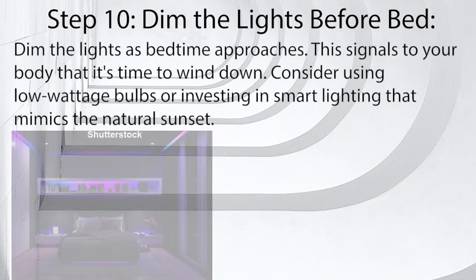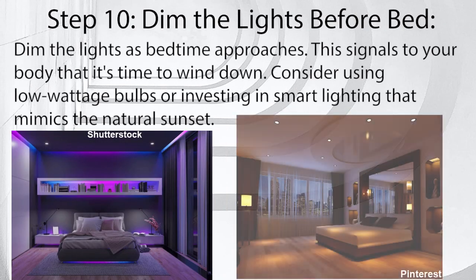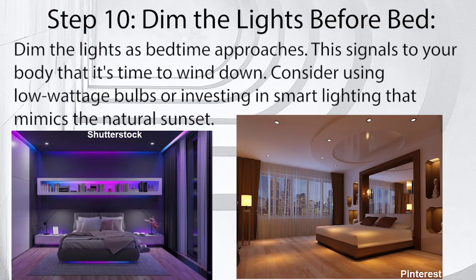Step 10: Dim the Lights Before Bed. Dim the lights as bedtime approaches — this signals to your body that it's time to wind down. Consider using low-wattage bulbs or investing in smart lighting that mimics the natural sunset.